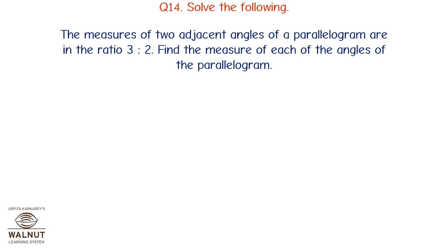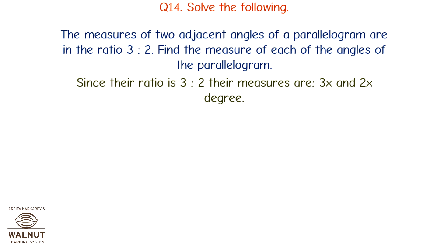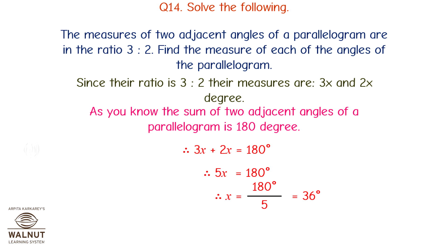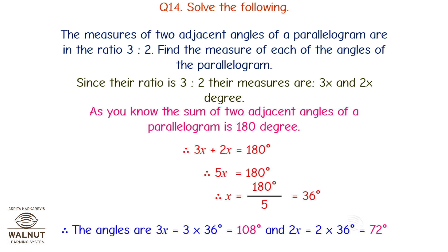The measures of two adjacent angles of a parallelogram are in the ratio 3:2. Find each angle. Let the measures be 3X and 2X. Since adjacent angles sum to 180 degrees, 3X plus 2X equals 180, so 5X equals 180 and X equals 36 degrees. Therefore, the angles are 3X equals 108 degrees and 2X equals 72 degrees.